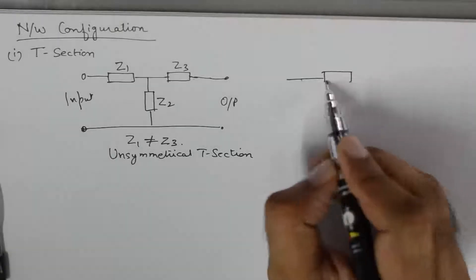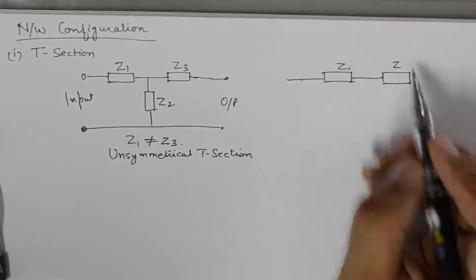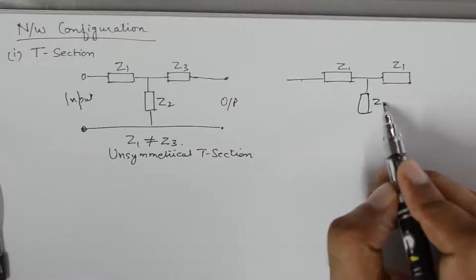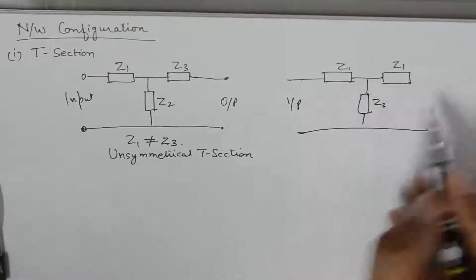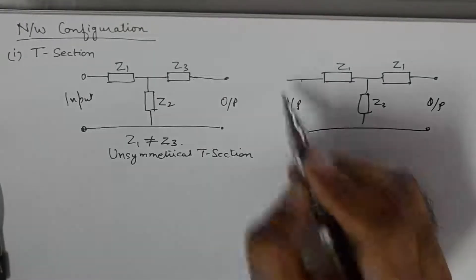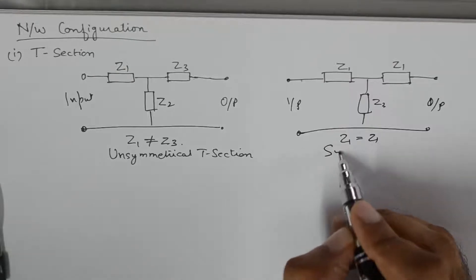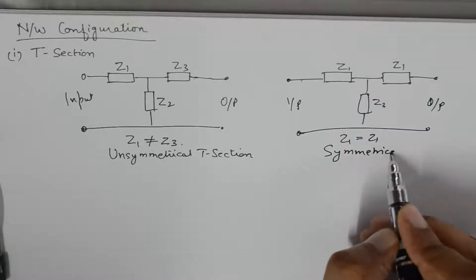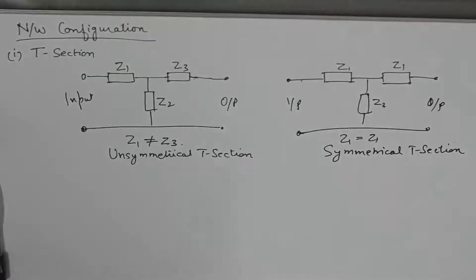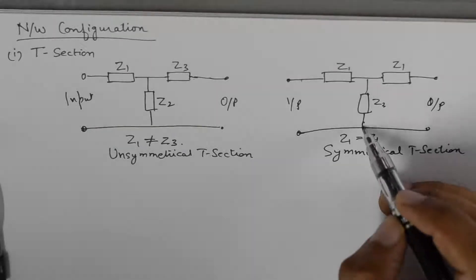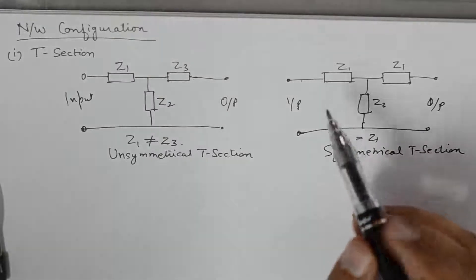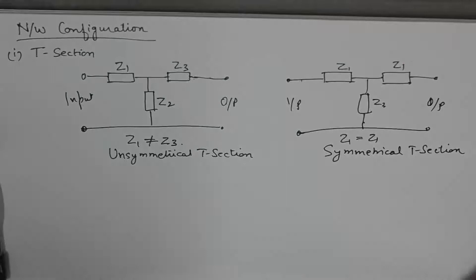If we take a case where Z1 is equivalent to Z3, with Z1 on both sides and another resistance Z2 in the middle — with input and output ports — this becomes a symmetrical T section. These network configurations are only valid for two-port networks, so one port will be the input port and the other will be the output port.